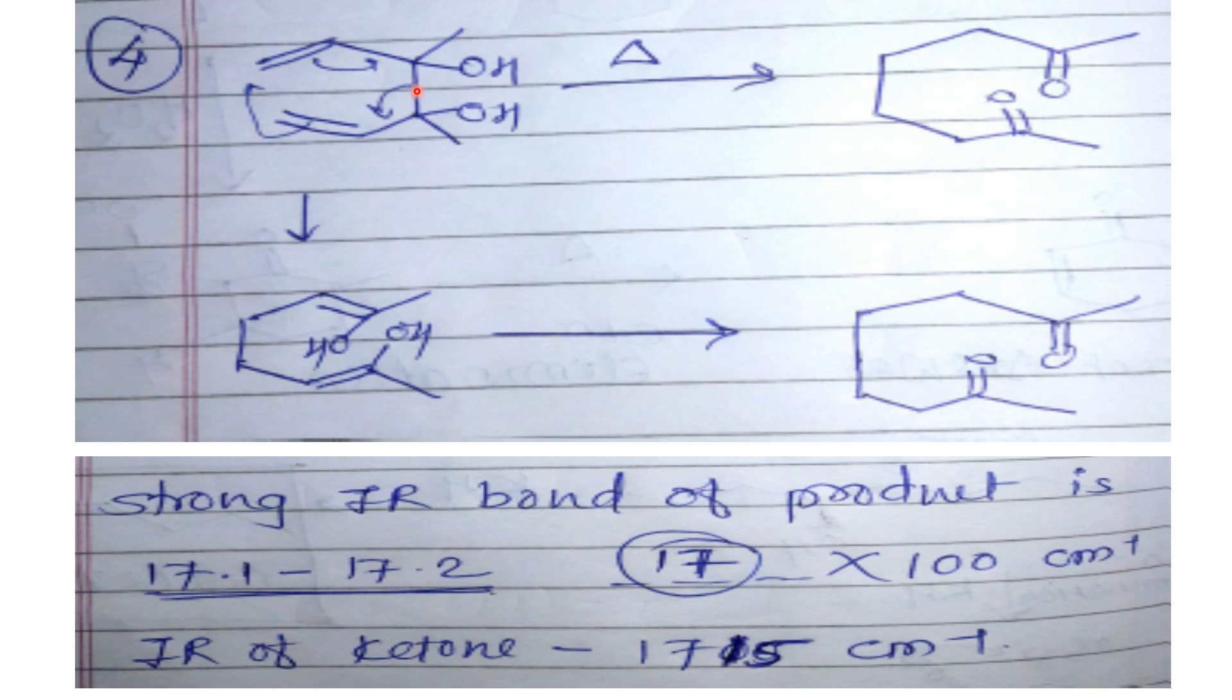After 3,3-sigmatropic rearrangement, two ketos will come. Normally we know they have asked IR value, and the IR value of keto we know is 1715. The value range is between 17.1 to 17.2 times 100, so we will be getting this 1715 cm⁻¹ IR value for these two ketos.